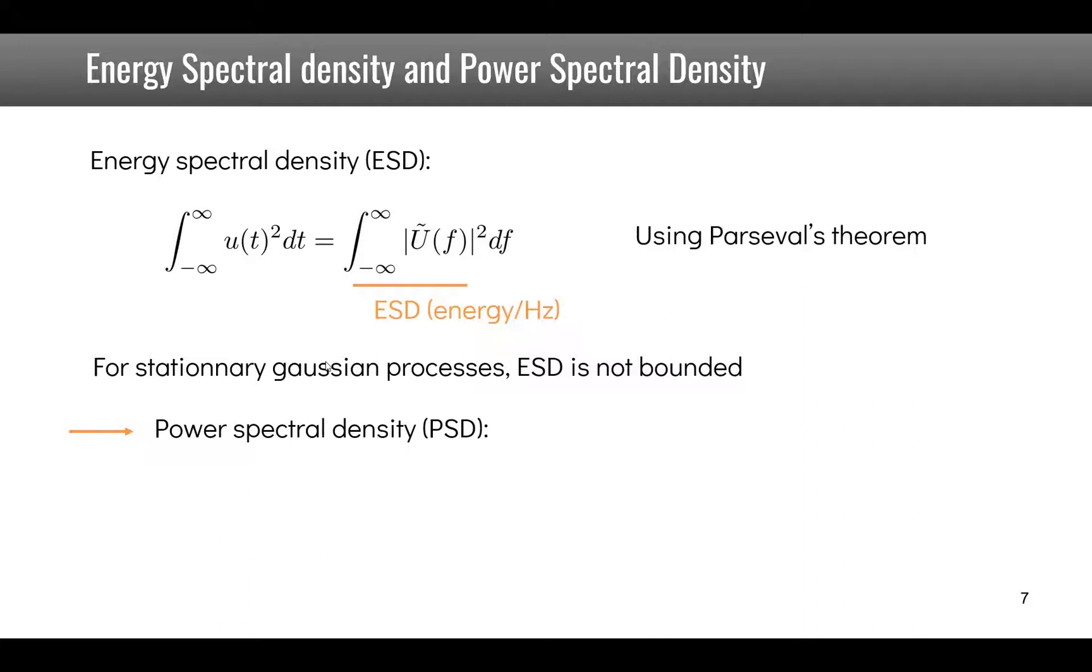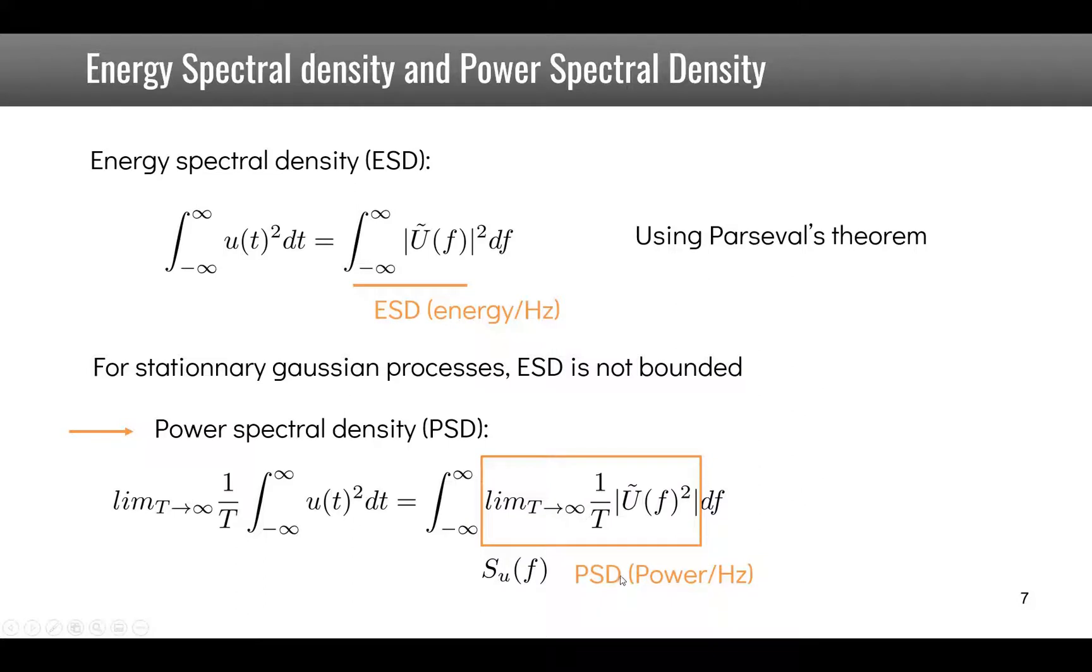For a stationary Gaussian process, this is a process that goes on continuously and is not bounded. This is why we introduce the power spectral density. It's the limit when the period tends to infinity of 1 over T integral of u(t) squared. Using Parseval's theorem, this equals the integral of the limit of 1 over T Fourier transform of u squared df. This part here is called the power spectral density. The unit is the square of the unit of u divided by hertz.